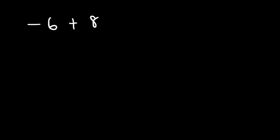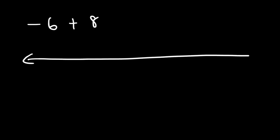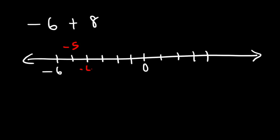Now it's your turn. Add these two numbers — negative 6 plus 8 — using the number line technique. You can start with 8 or you can start with negative 6. Let's do it both ways. Starting with negative 6, we're going to add 8 units, so let's travel 8 units to the right. The first one is negative 5, the second is negative 4, third, fourth, fifth, sixth, seventh, and eighth. So negative 6 plus 8 is 2.